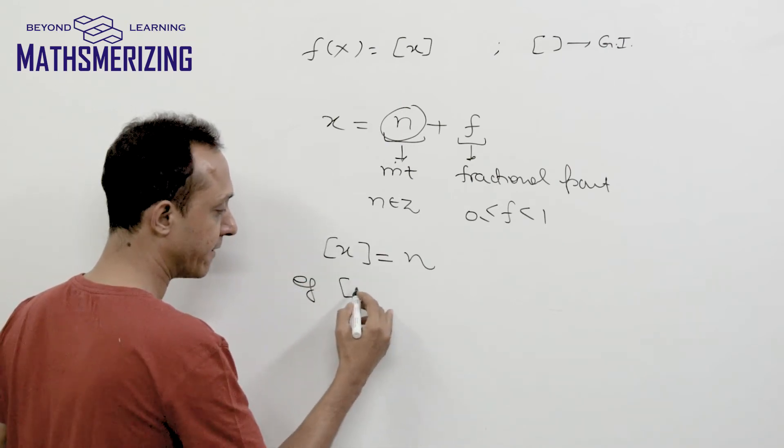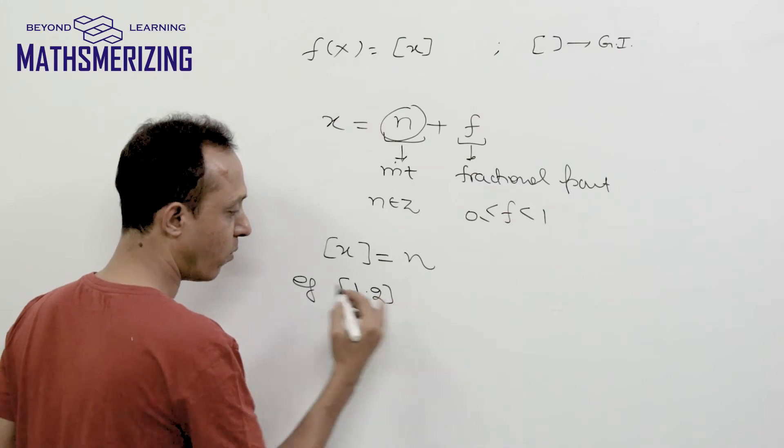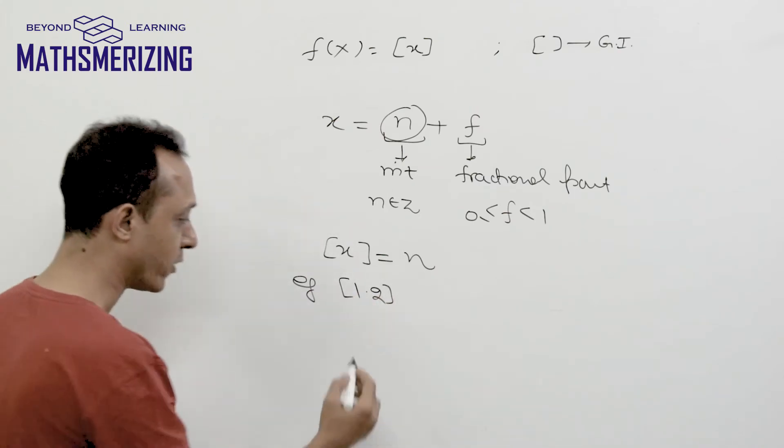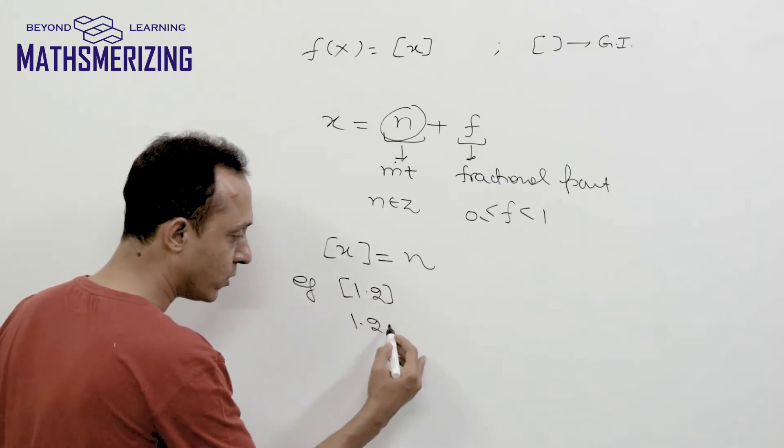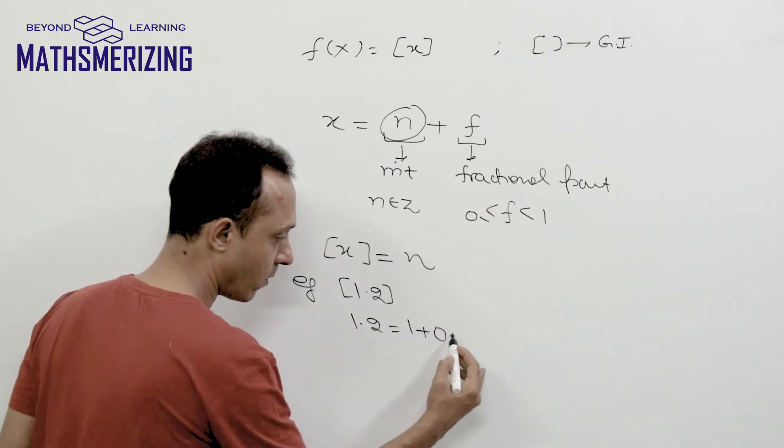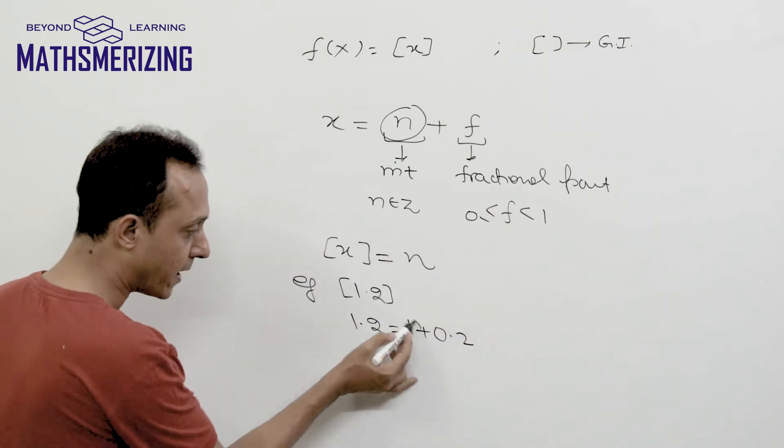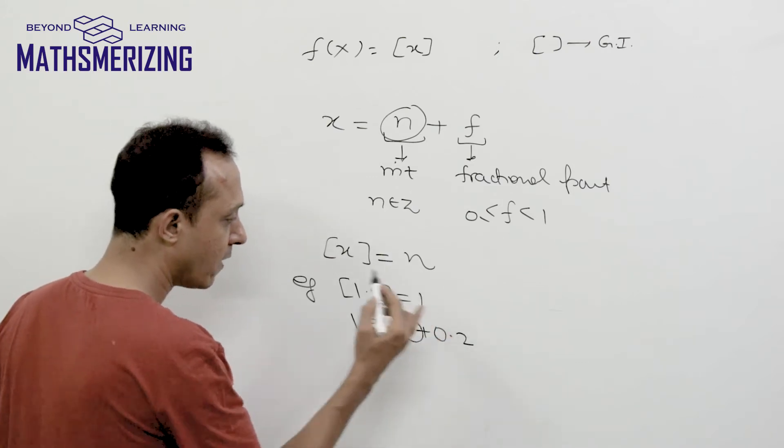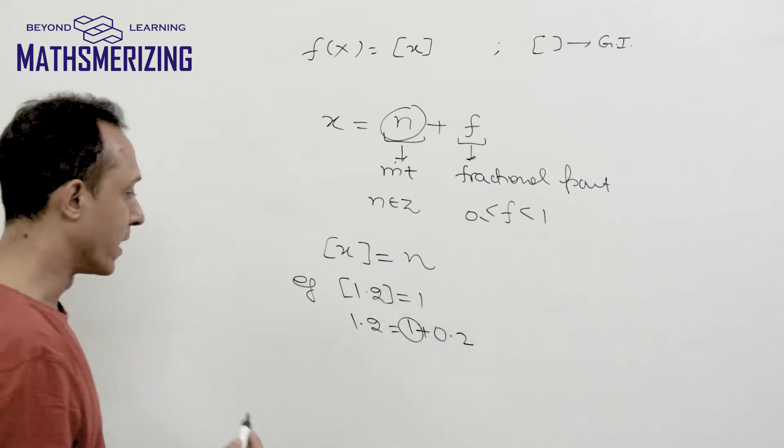For example, suppose I have to find greatest integer function of 1.2. I can write 1.2 as 1 plus 0.2, so its integral part is 1. Therefore, the value of [1.2] is simply 1.